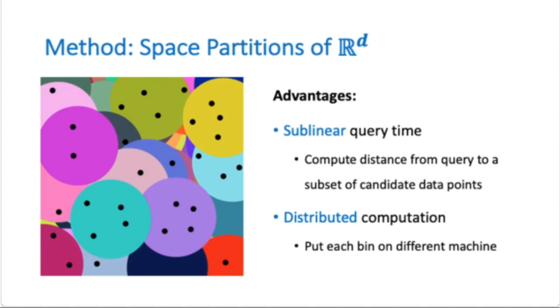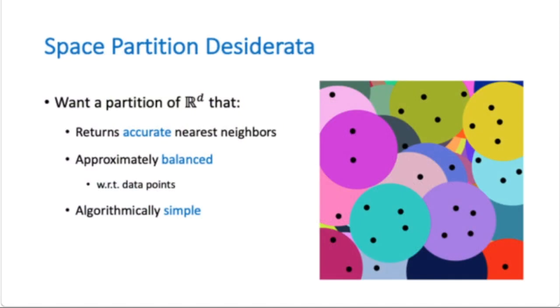So what makes space partitions good for nearest neighbor search? First, we want to return accurate nearest neighbors. Second, we want the partition to be balanced in that each region contains roughly the same number of data points. Since the runtime of each query is proportional to the number of points in each region and nearby regions, this would ensure that answering any query would be fast regardless of the region it belongs to. Third, we want the partition to be algorithmically simple, meaning that given a query point, we can quickly compute which region it belongs to.